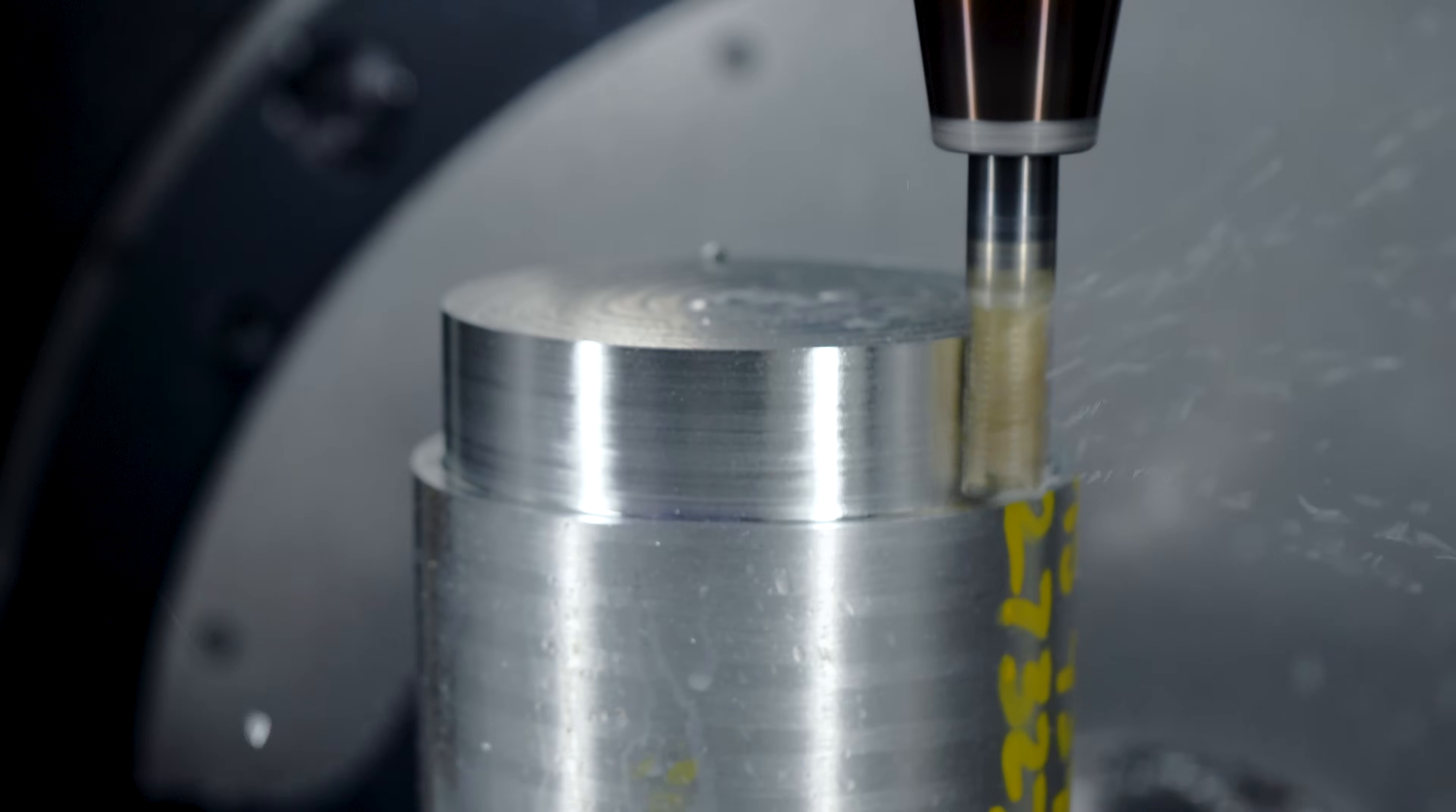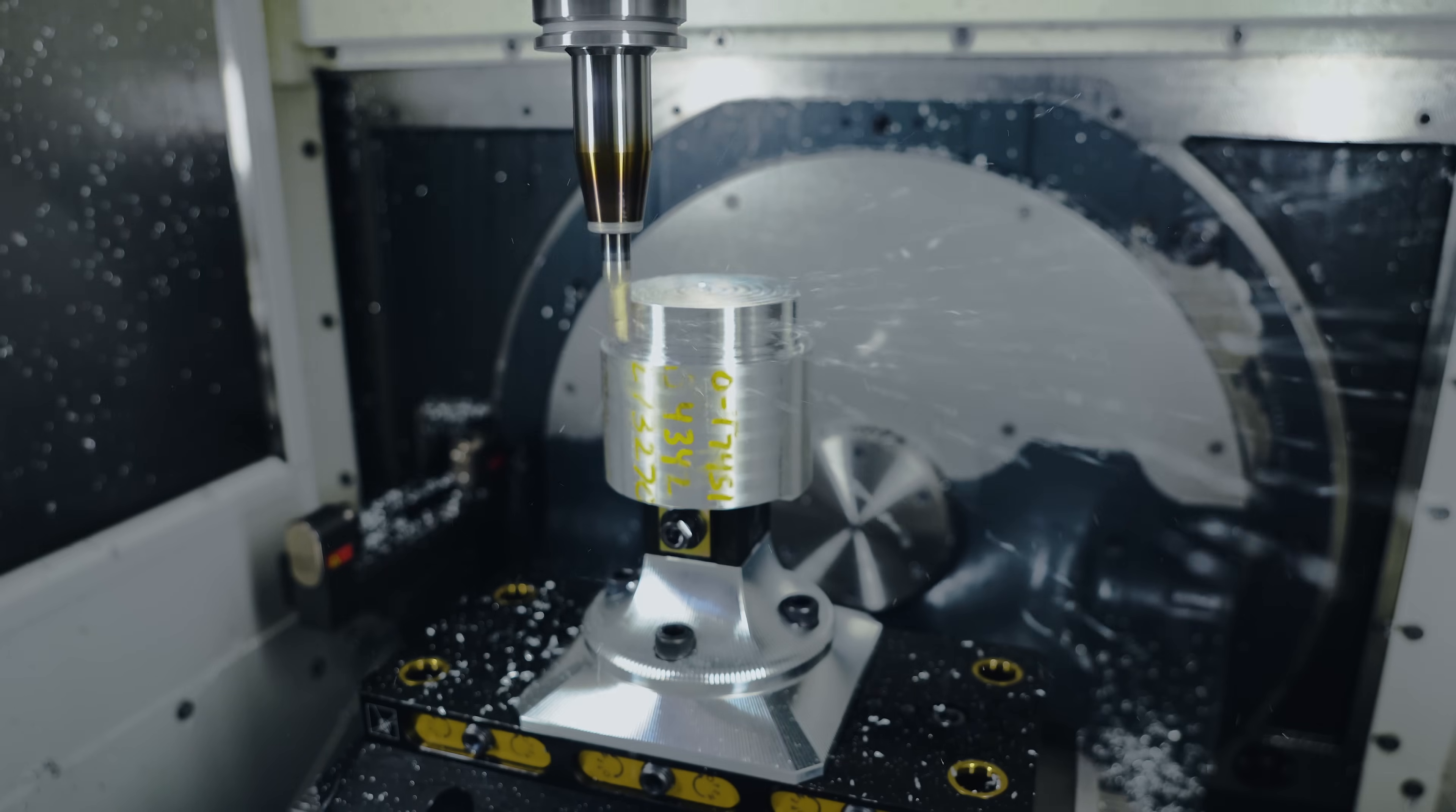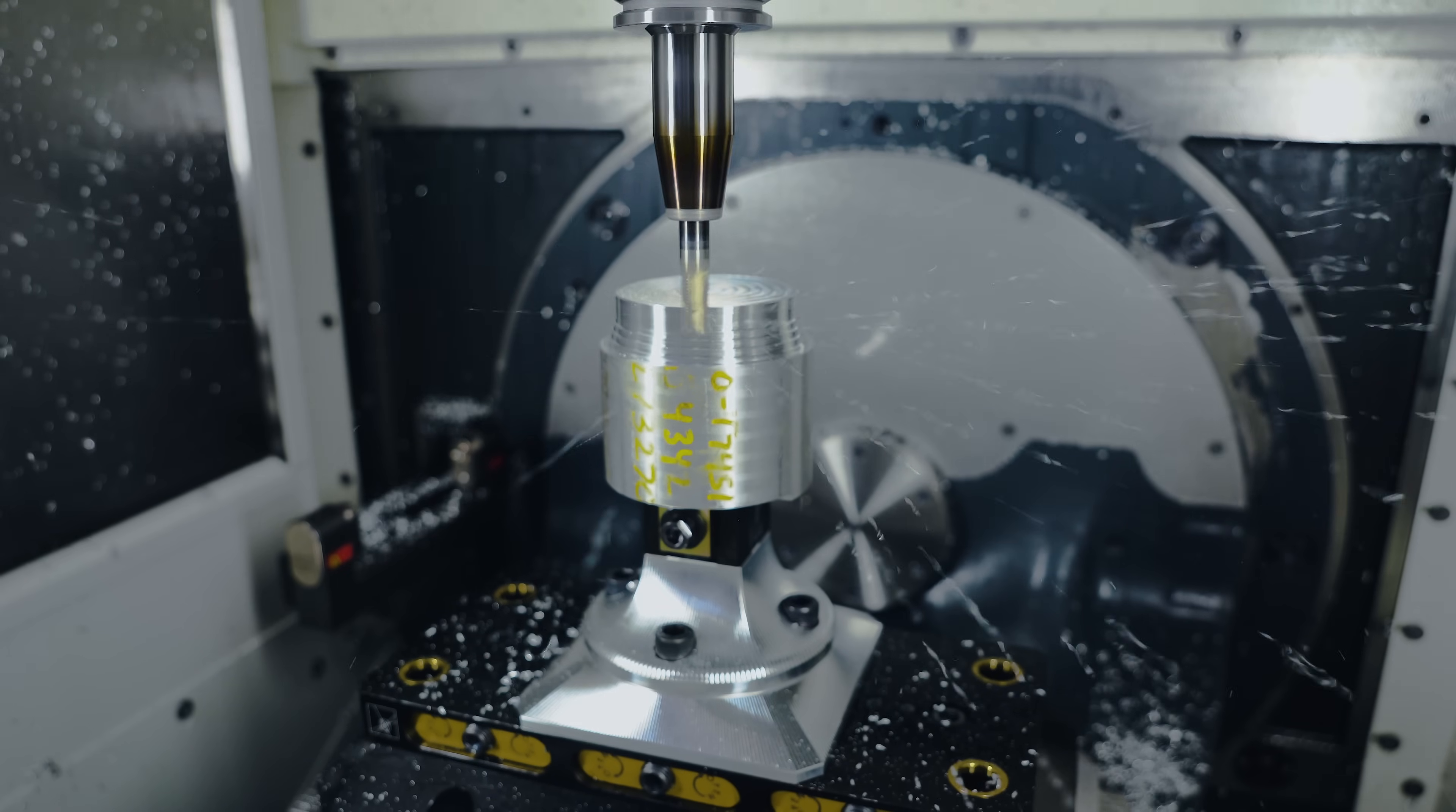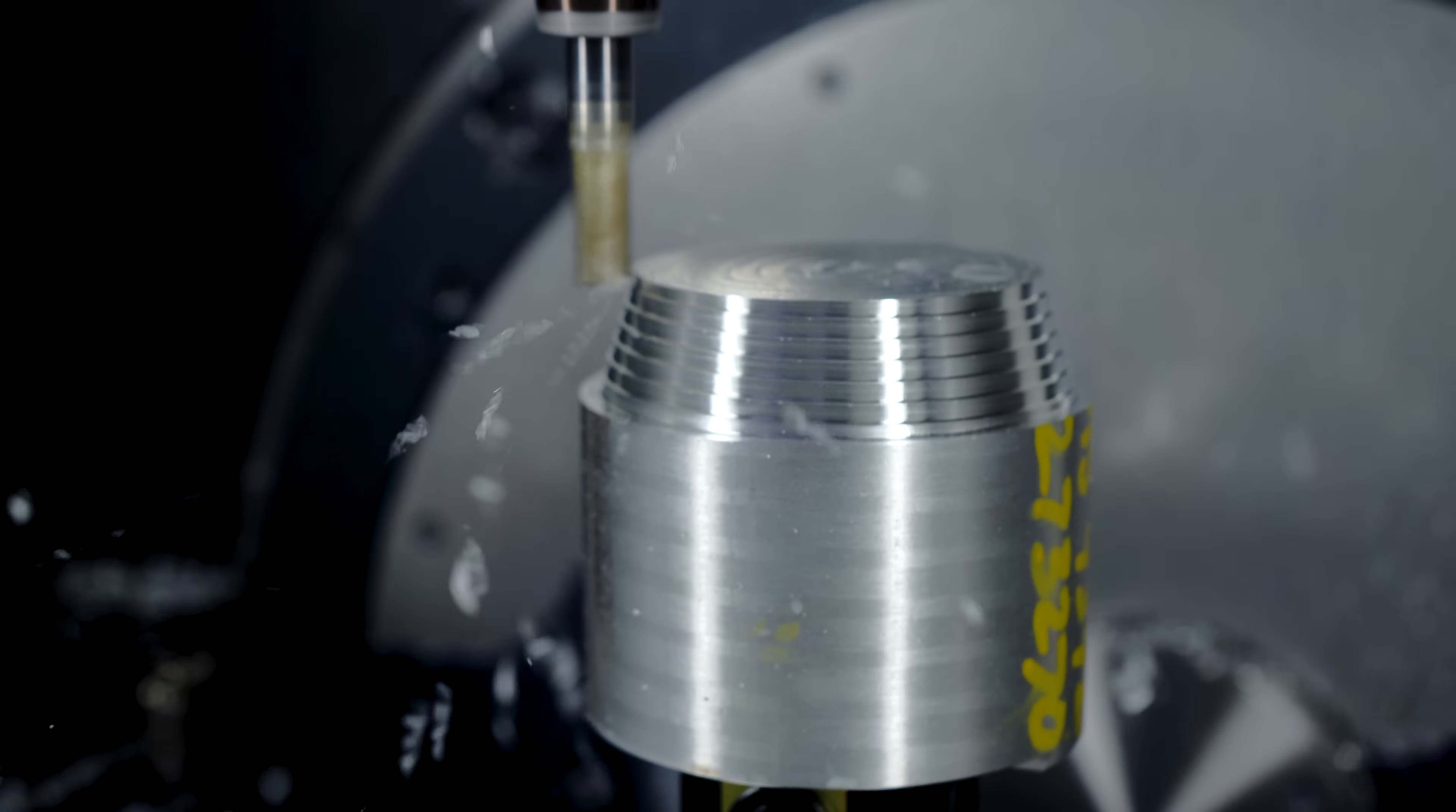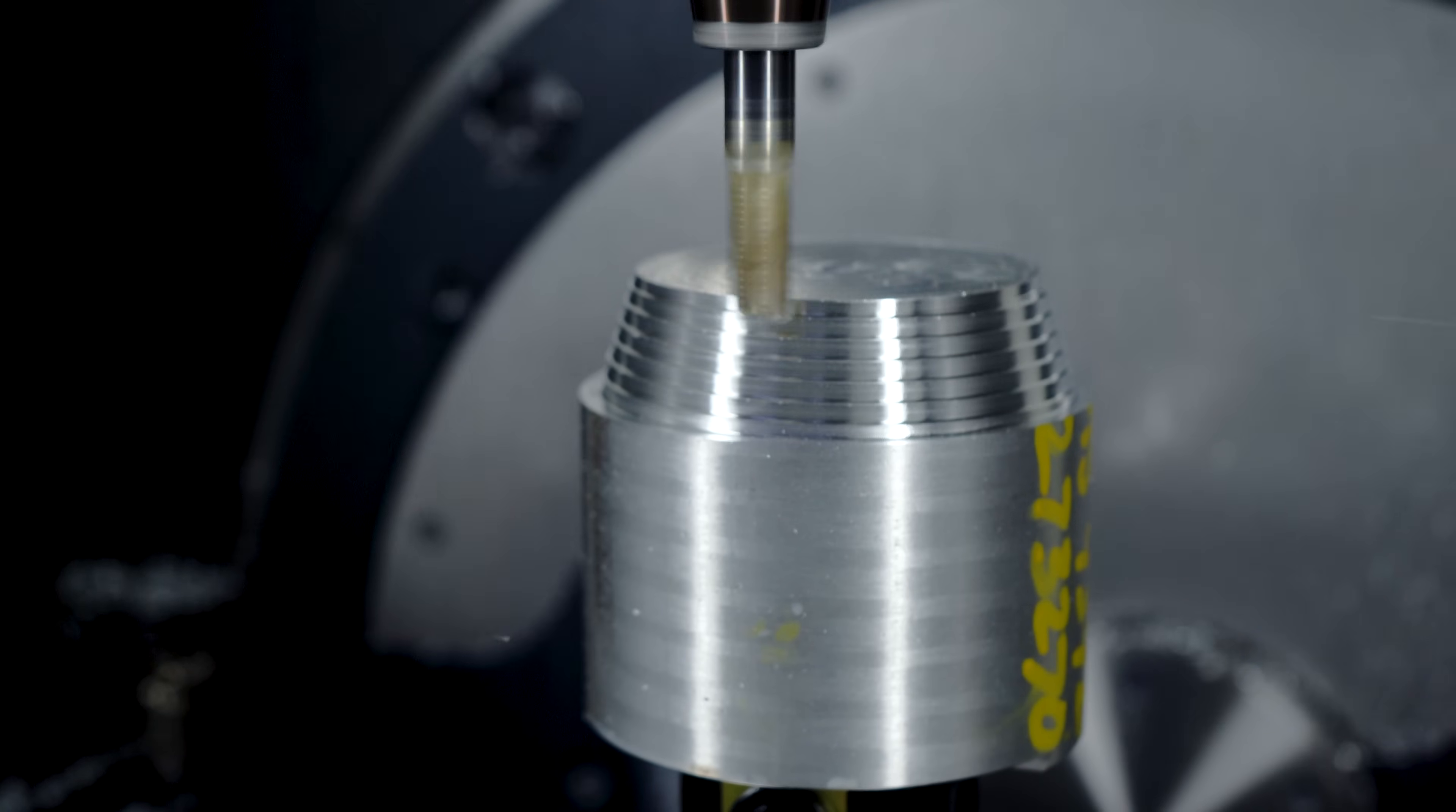For the first pass we're using a half inch three flute 45 degree helix chip breaker from Helical running at 14,000 rpm and 125 inches per minute.